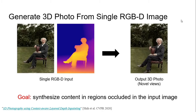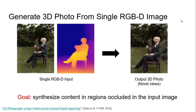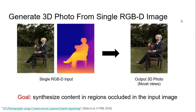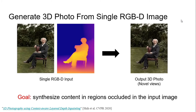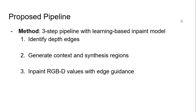In this work, our goal is to generate a 3D photo from one single RGBD input. To achieve this, we propose a three-step pipeline to identify and fill in realistic content in the regions occluded in the input.